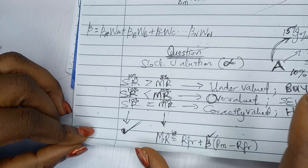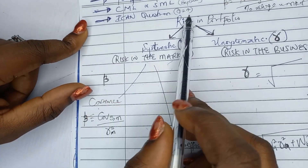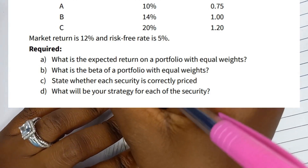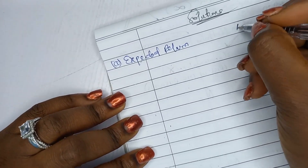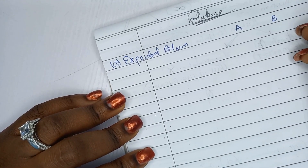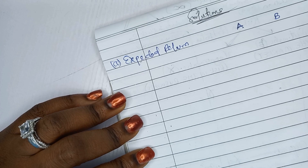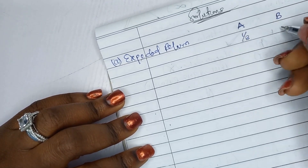Now let's solve the question. Part A asks for the expected return on a portfolio with equal weight. We have assets A, B, and C. With equal weight, each gets 1/3 of the portfolio — since 100 divided by 3 equals 33.33%, meaning the weight is 1/3 each, and they all sum to 1 (100%).